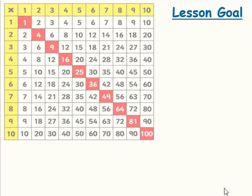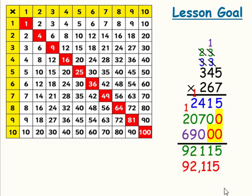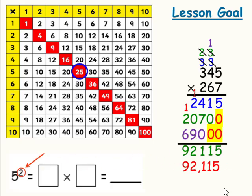In our lesson for today, we'll be multiplying whole numbers that consist of one digit, all the way up to three digits. We will also learn when we see a number with an exponent of 2, meaning to multiply the number by itself.